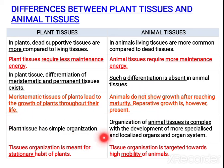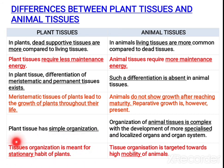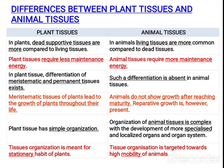Plant tissues show simple organization, while animal tissues show complex organization. The tissue organization in plants is mainly meant for stationary habit, since plants do not move from one place to another. In the case of animals, since they move from one place to another, they accordingly show specialized tissues.